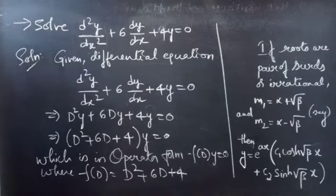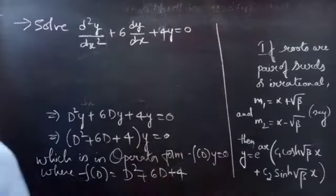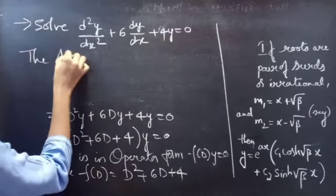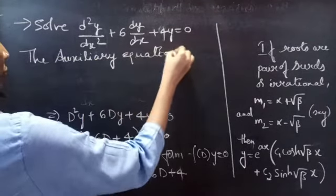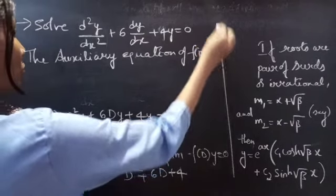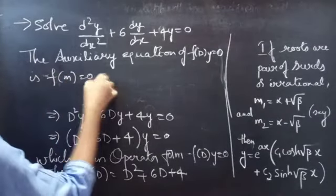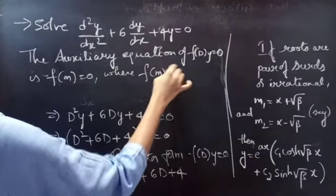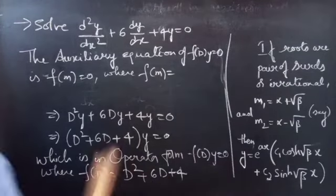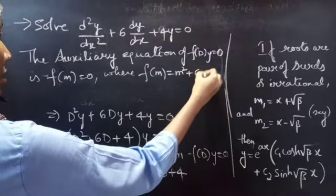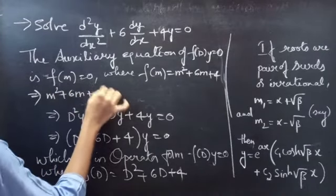We need to find the solution to the given equation. Using the auxiliary equation of F(D)·y = 0, the auxiliary equation is F(m) = 0. Since F(D) = D² + 6D + 4, we replace D by m to get F(m) = m² + 6m + 4. So our auxiliary equation becomes m² + 6m + 4 = 0.